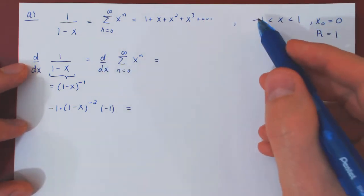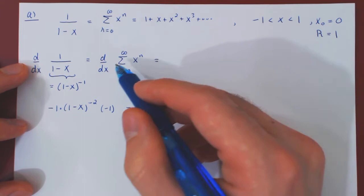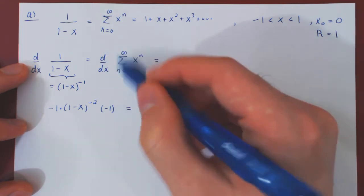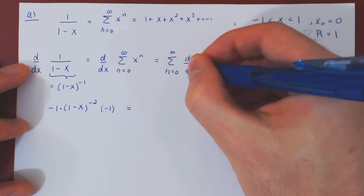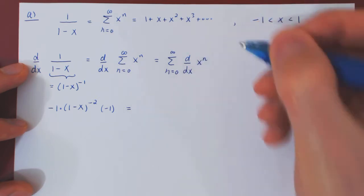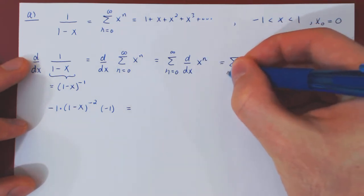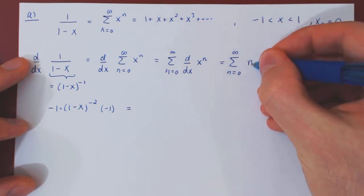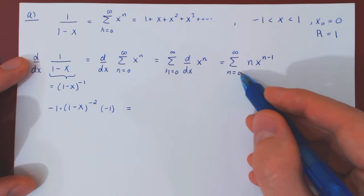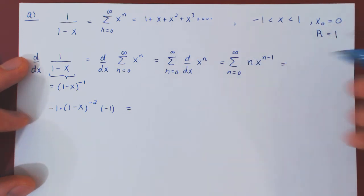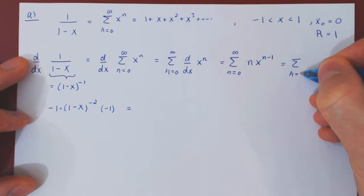On the open interval of convergence, the derivative of a power series is the series of the individual derivatives — the derivative of a sum is the sum of the derivatives. The terms are x to the n, and differentiating x to the n with respect to x by the power rule gives n times x to the n minus 1. When n equals 0, the first term of the series is 0, so we can begin the series at n equals 1.